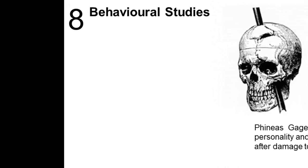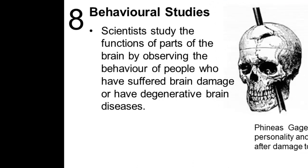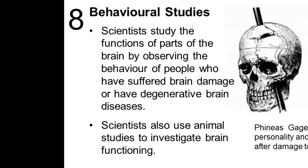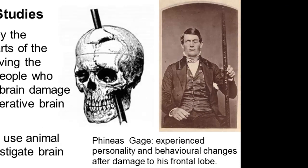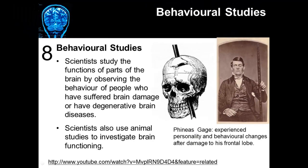The last way scientists can look at the brain is through behavioral studies. Scientists study the functions of parts of the brain by observing the behavior of people who have suffered brain damage or have degenerative brain diseases. Scientists can also use animal studies to investigate brain function, where certain animals can have parts of the brain destroyed and then behavior is monitored. In human medicine, one of the hallmark studies of behavior and brain injury was the study of Phineas Gage — an individual who worked on the railroad and experienced personality and behavioral changes after damage to his frontal lobe. This picture depicts Phineas Gage and the spike that went through his skull while he was working.